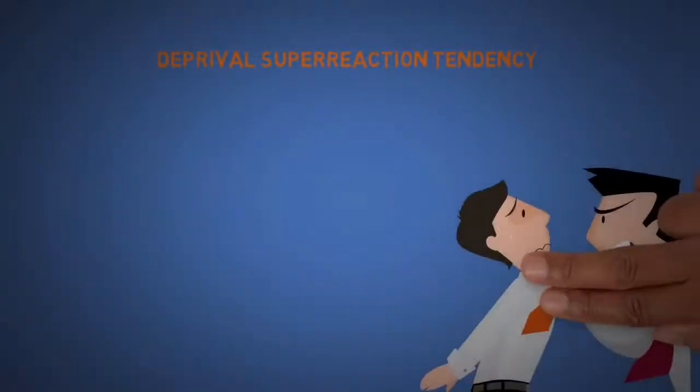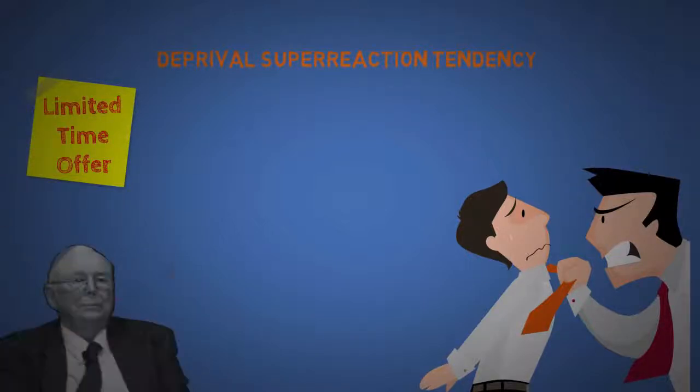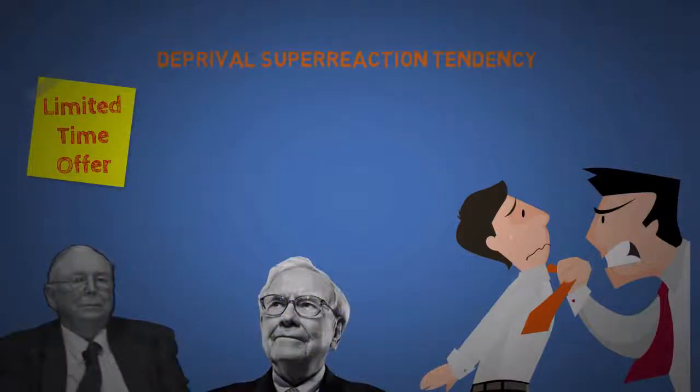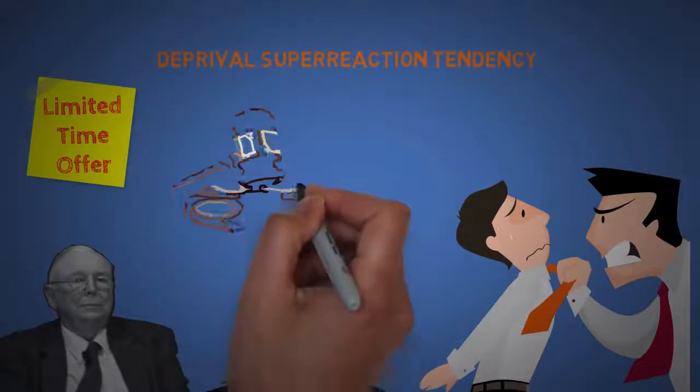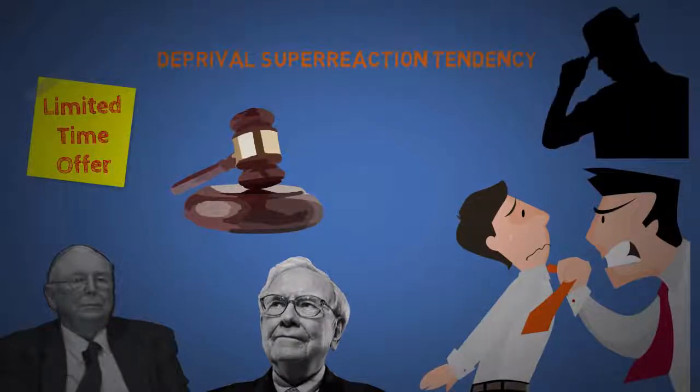The fourteenth is a deprival super reaction tendency. People tend to act irrational with intensity, even to small losses sometimes. This is why limited time offers are powerful. Even Charlie Munger and Warren Buffet, two of the most successful people in this world, both hate being in auctions because they always feel like getting manipulated. Going once, going twice, sold to the man wearing the fedora hat.